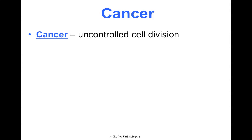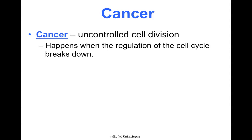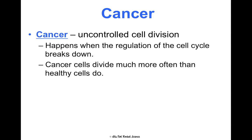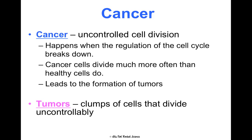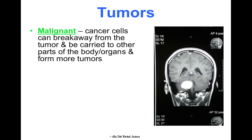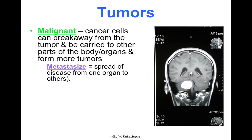Cancer is when this doesn't happen correctly. Cancer is uncontrolled cell division — when the cell cycle is happening uncontrollably. The regulation of the cell cycle just breaks down, and the cells start dividing way more often than a healthy cell would. This can lead to the formation of tumors — clumps of cells that are dividing uncontrollably. Tumors can be malignant or benign. A malignant tumor means the cancer cells have broken away and moved to different parts of the body or different organs, forming even more tumors — we say they have metastasized.